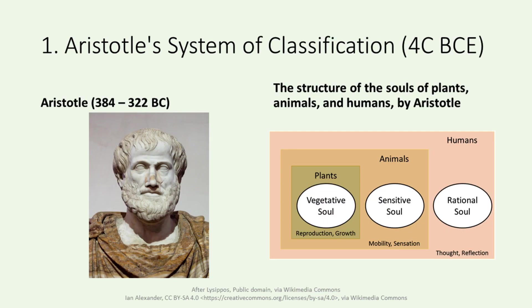Long before Carl Linnaeus revolutionized the classification of living organisms in the 18th century, ancient scholars had laid the foundational stones in the realm of taxonomy. Foremost among these thinkers was the great philosopher Aristotle. He was not only a philosopher but also a biologist who wrote books on many scientific disciplines, including taxonomy. His approach to taxonomy was rooted in keen observations of the natural world. Rather than merely categorizing species based on their appearances, he delved deeper, studying their behaviors, habitats, and anatomical structures.